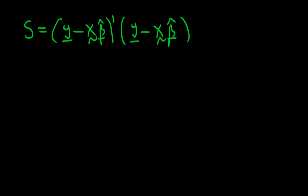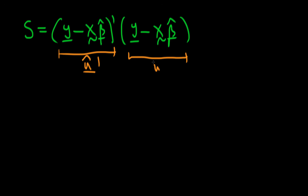In this video we're going to continue our derivation of the least squared estimators in matrix form. At the end of the last video we found that we were able to write out our sum of residuals squared in this particular form, where this first term is our vector of residuals transposed and this second term is our vector of residuals.